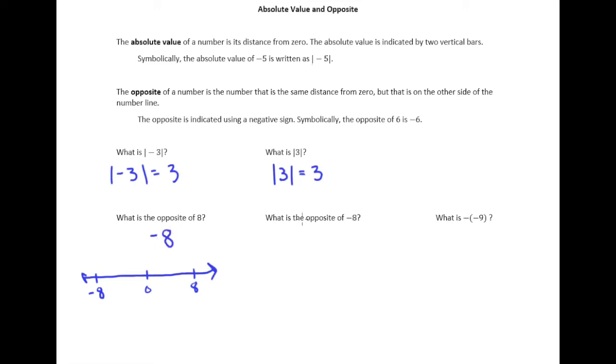What is the opposite of negative 8? Well, here's negative 8. The number on the other side of the number line that is the same distance from zero is 8. So the opposite of negative 8 is 8.